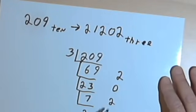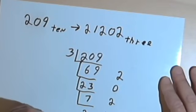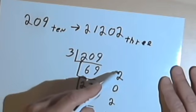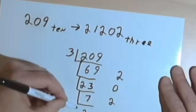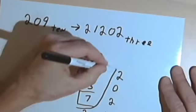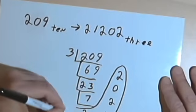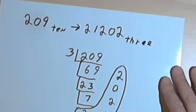So I take that 2 that we had and then look at my remainders working backwards: 2, 1, 2, 0, 2 — which is the same number that I got when I used the other method.